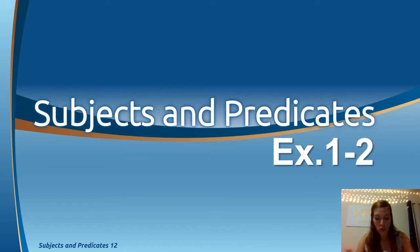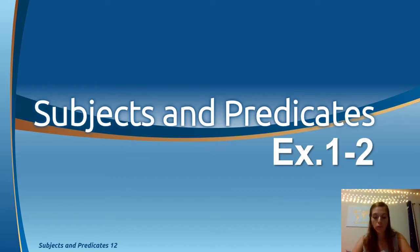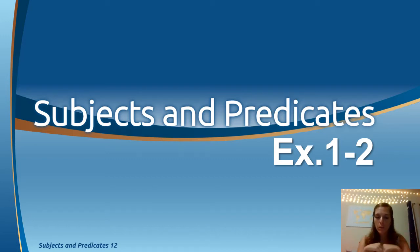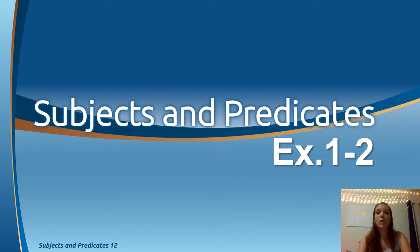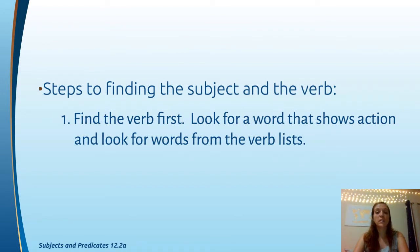Exercise one: subjects and verbs — draw two lines under each verb and one line under each subject. Watch carefully for compound parts and verb phrases. Exercise two is the same thing, but with slightly trickier sentences, so it breaks into two parts. Let's go through a quick review. I know you might look at half this presentation and think you already know it — and that's fine, but review is always good.